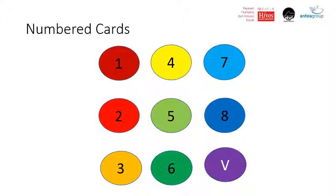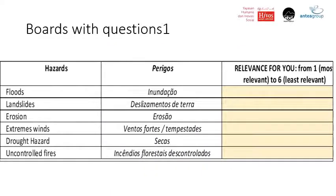There are cards numbered, and the V can also serve as A — V for vulnerability, A for adaptation or adaptive capacity. It's very important to have all the boards ready when you start asking the questions. We're going to go through them in more detail, because this is all about ranking preferences — ranking the different things listed in the questions. For question number one, we have the following boards.